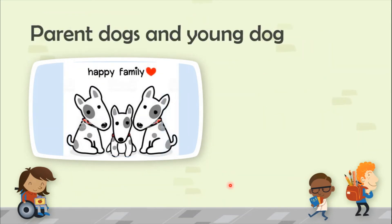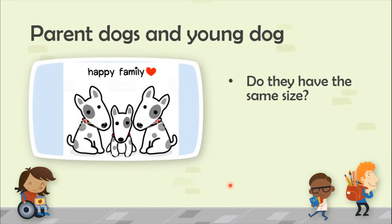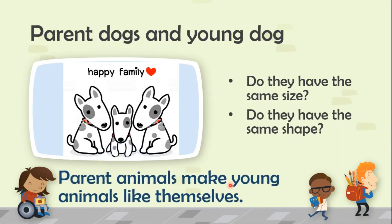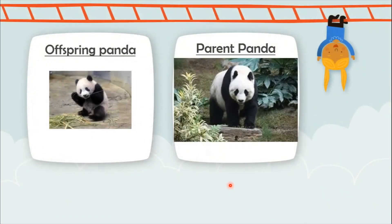Parent dogs and young dog — do they have the same size? Do they have the same shape? Yes. Parent animals make young animals like themselves. Look at the offspring panda and parent panda.